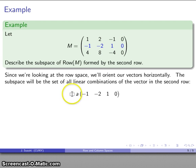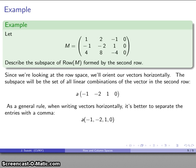So this is linear combinations, scalar multiples of the vector (-1, -2, 1, 0). As a general rule, if I'm going to write the vectors horizontally, it's better to separate the entries with a comma. So I might write my subspace this way.